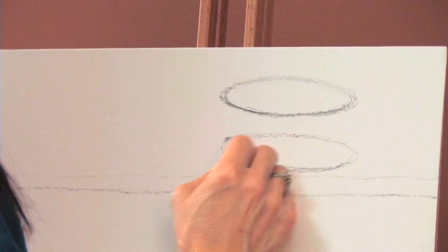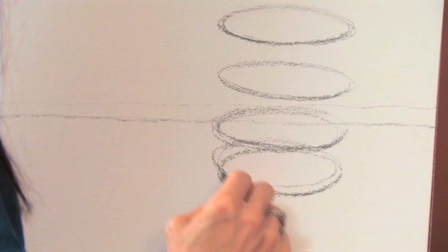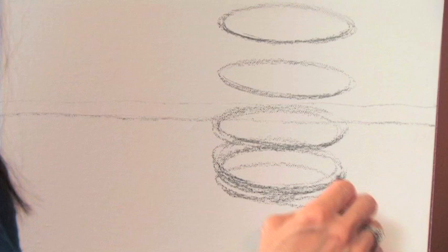So we're going to draw a series of ellipses that is going to signify our cylinder. Don't worry if they're perfect, just keep on going around and around in a circle until you get the feeling for it.